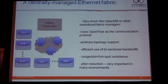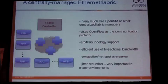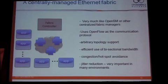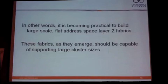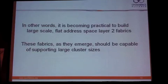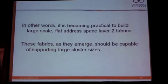So there's nothing magic about OpenFlow — it just happens to be convenient. There are other routing protocols we should be looking at, like TRILL and things like that. I'm not going to go into any detail about those. Just to say that there is this notion of a centrally managed Ethernet fabric, and if we had it, we'd really be somewhere. It should be possible to build really large flat address Layer 2 fabrics.